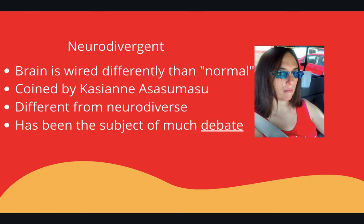The term neurodivergent refers to somebody's brain wiring being different from what is considered normal. Neurodiversity is the idea that there are a lot of different brain wirings out there that are natural variations of the human brain. Neurodivergent refers to a specific person whose brain wiring is different from normal. The term itself was coined by long-time autistic activist Kassiana Asasamas, independently from Judy Singer. She first started using the term neurodivergent online in 1999, which would be one year after Judy Singer's thesis about neurodiversity.